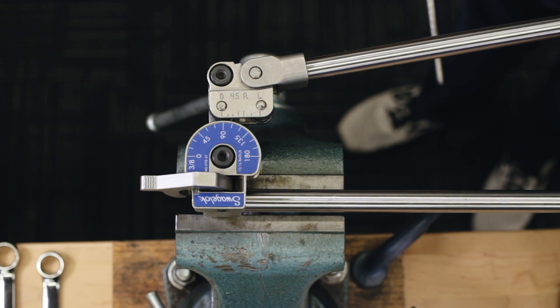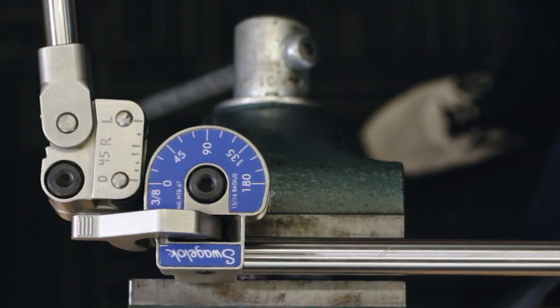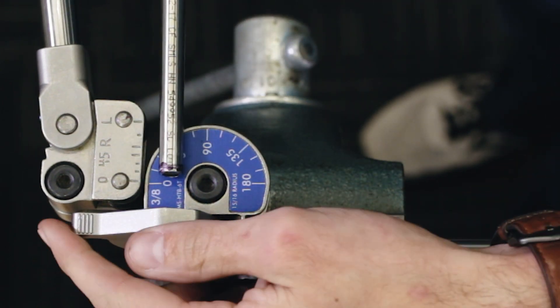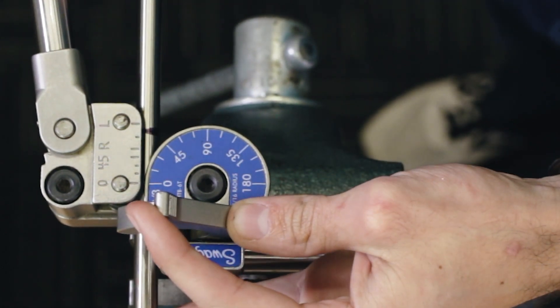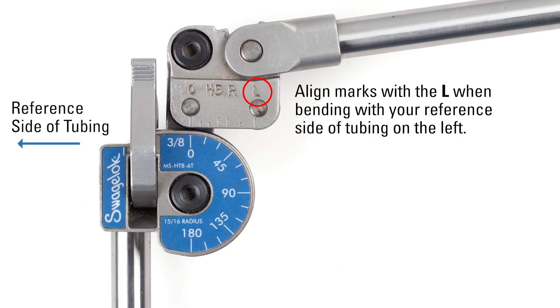You can easily put this tool in a vise to help keep it steady and leave your hands free to control the tubing. Lift the short arm of the bender, align both zero markers on the tool, and insert the tube into the jaw of the bender. Then adjust the tube until your mark is aligned with the L position. For 90 degree bends, you'll always align your mark with the L.